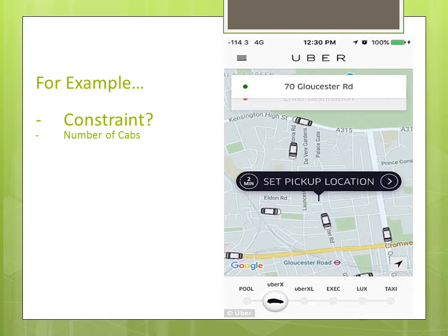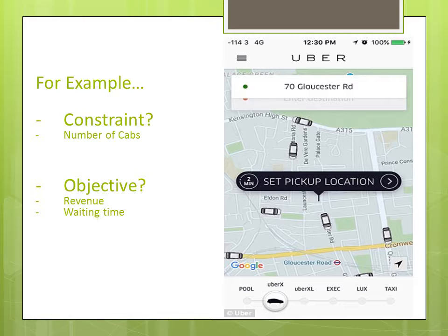What is the objective that Uber might have in mind while doing this? There could be multiple objectives. One could be they want to maximize revenue from the pickup, or because they're focusing on growth, they want to minimize the waiting time to give you the best customer experience and ensure that you use Uber over and over again. This is an example of a real-world decision where there is a lot of data, a clear constraint, and some objectives — and Uber needs to use these kinds of techniques to best decide how they can serve you from the multiple taxis that they have.